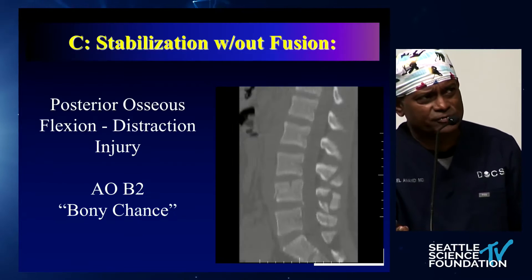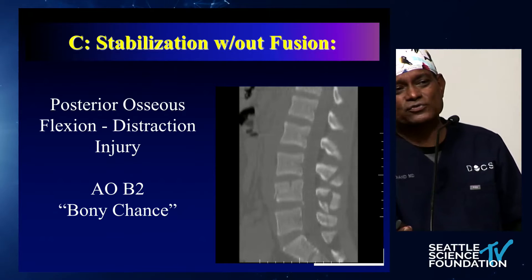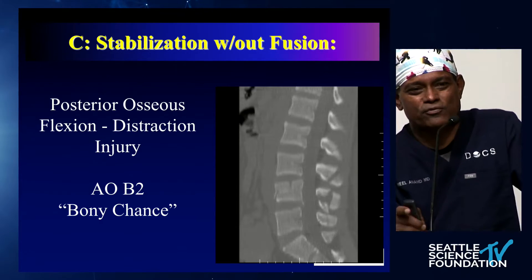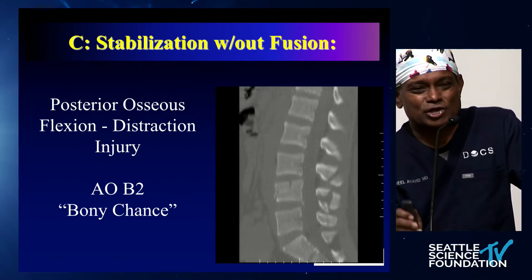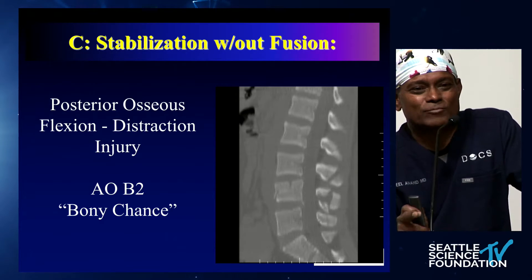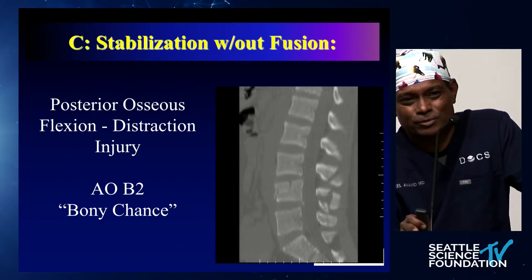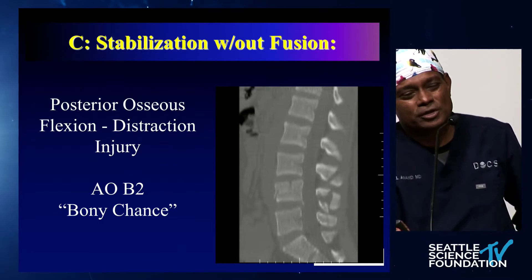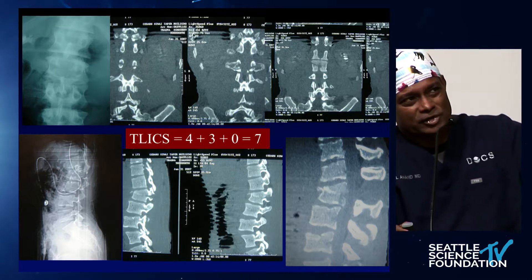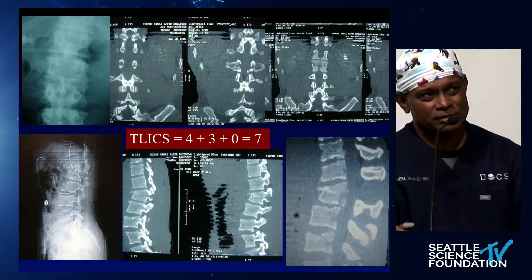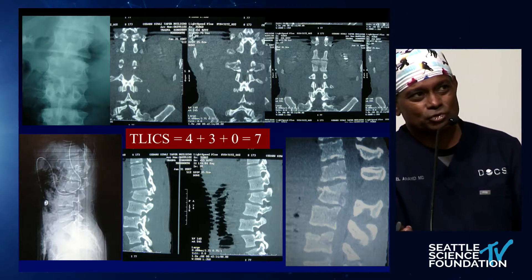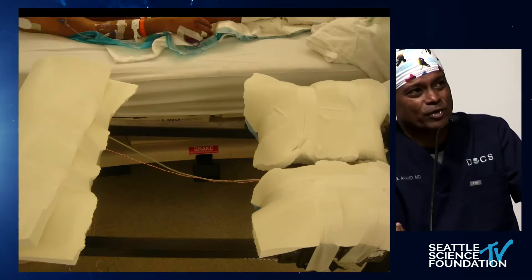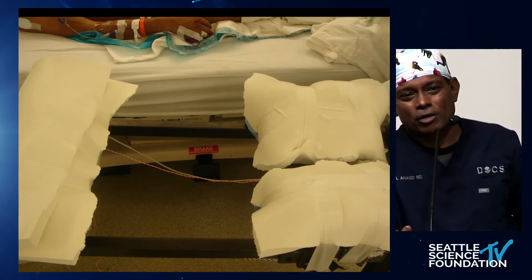How about a Chance fracture? This is the ideal indication. You have a bony through-bone flexion-distraction injury — this is a slam dunk for perc fixation. All the patient needs is alignment, fixation, and the bone heals by itself. This really needs no fusion. You perc fix it up and down — like this patient, basically a TELICS 7, flexion-distraction injury but through bone. You can see it going right through the spinous process and the pedicles.